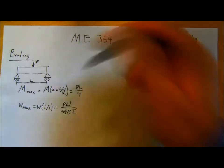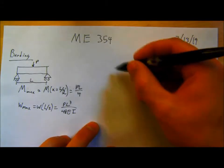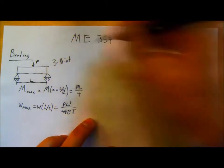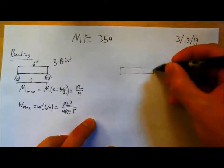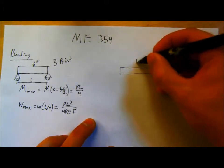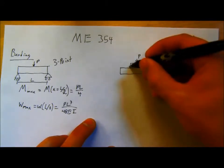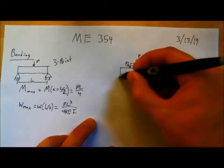The max deflection is also in the center. W at L over 2, which is equal to P L cubed over 48 E I. And that follows a cubic deflection there. The other is four point bending. I have some P, P over 2, P over 2, P over 2, again simply supported on roller.